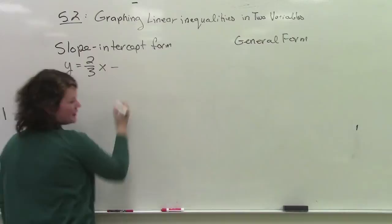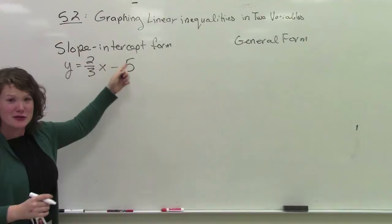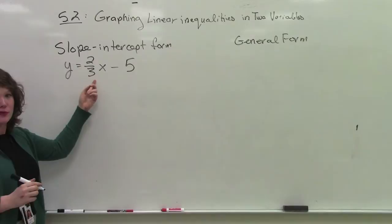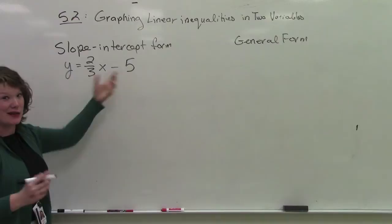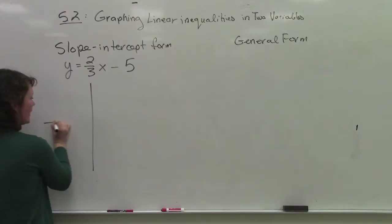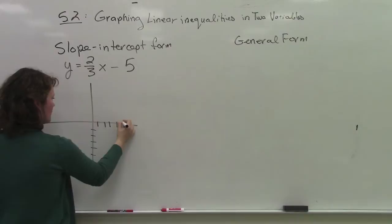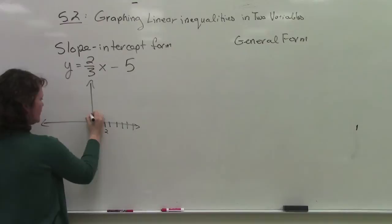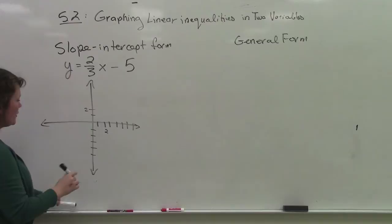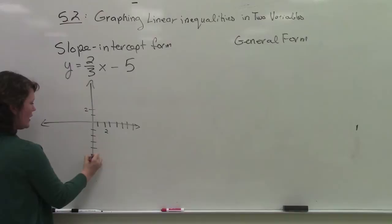So this one we're going to say y equals 2 thirds x minus 5. The reason why this is called the slope-intercept form is because it gives us the slope, rise over run, 2 thirds, and the y-intercept. So when we graph something that looks like this, we start off with the y-intercept. I'm just doing a quick sketch here, 2 and 2, just so you know that each one of these things is worth 1.